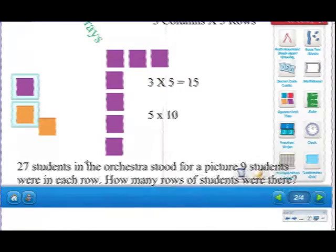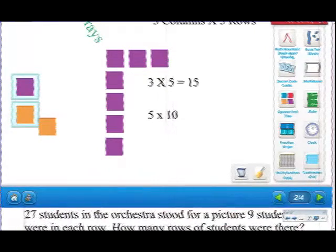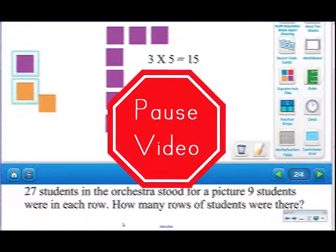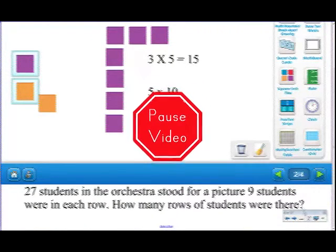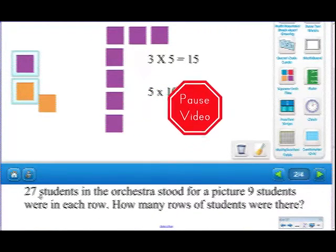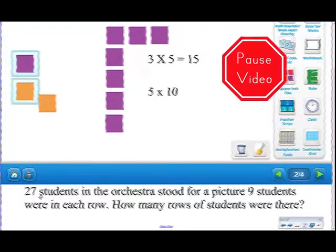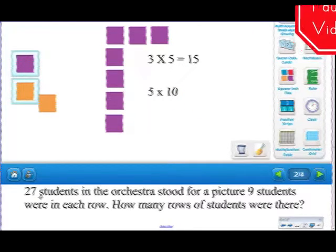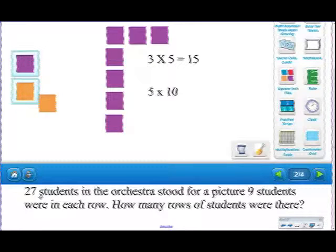Your second problem, let's keep it down here, and you guys can look at it there. Pause the video, and I want you to think this one through. If you have 27 students in the orchestra, and they stood for a picture, and 9 students were in each row, how many rows of students were there? I want you to set it up like a fast array, so you're going to find the total.